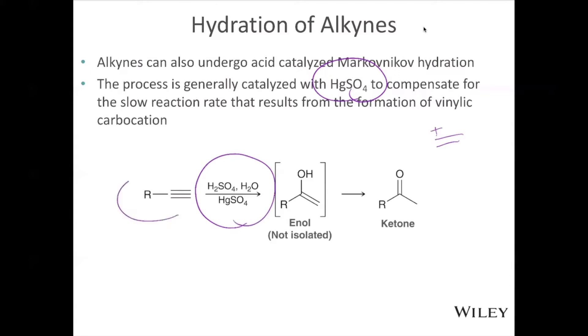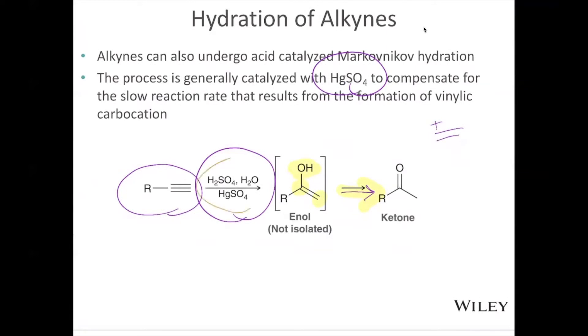It takes our alkyne molecule into this enol, and then that quickly tautomerizes into the ketone. The first step of the reaction adds the OH to the more substituted carbon and the H to the least substituted carbon. So that first step is still Markovnikov, but then in this case, we go to the ketone. Because this reaction has acid in it, this tautomerization is catalyzed by acid.